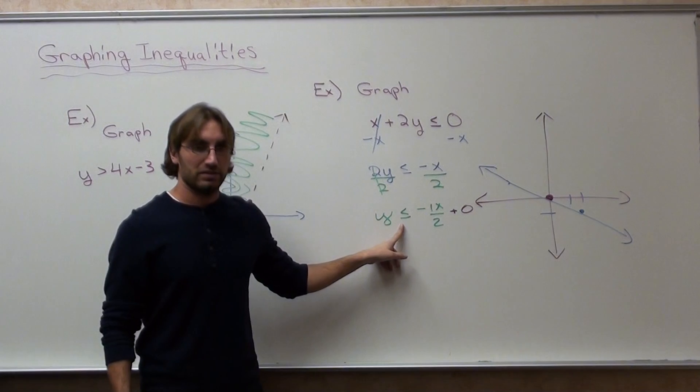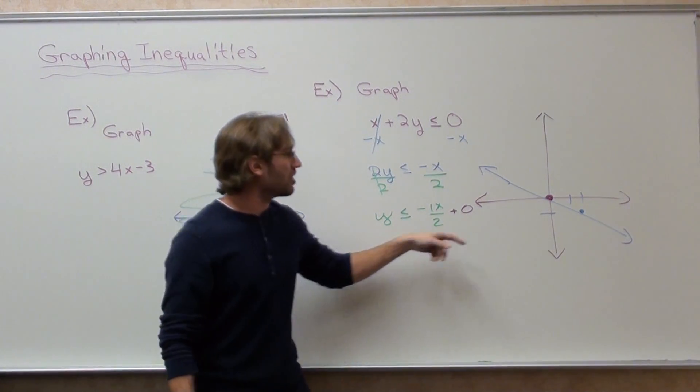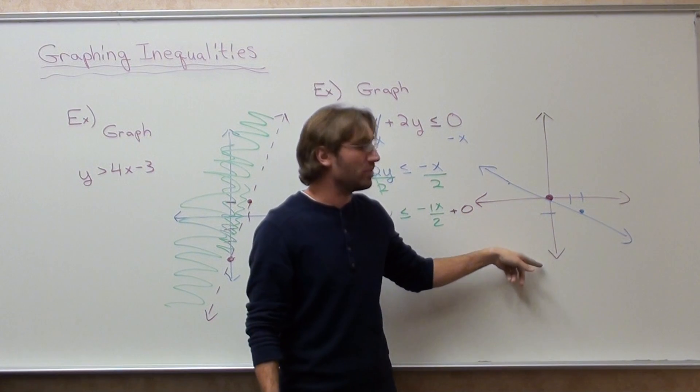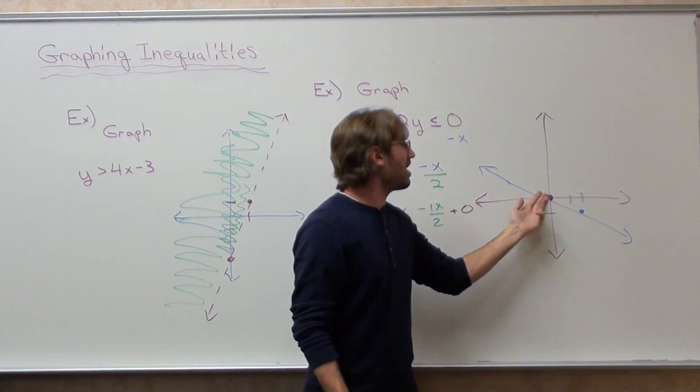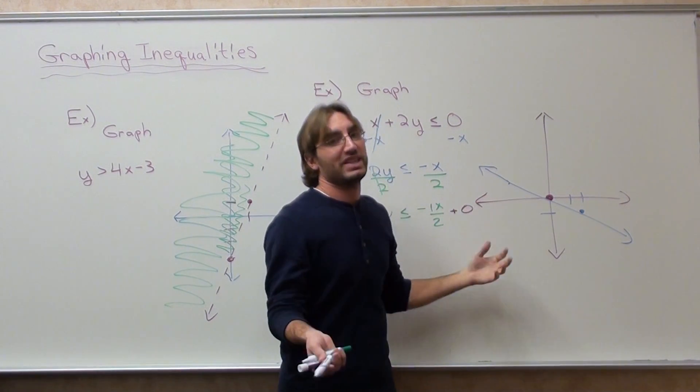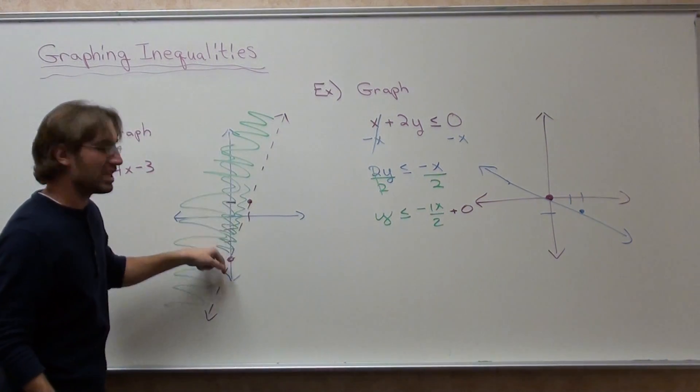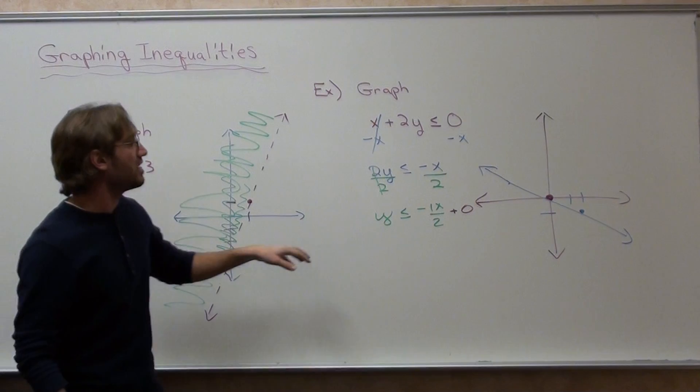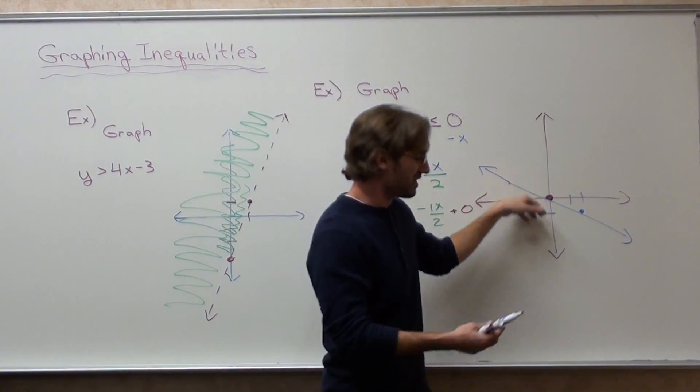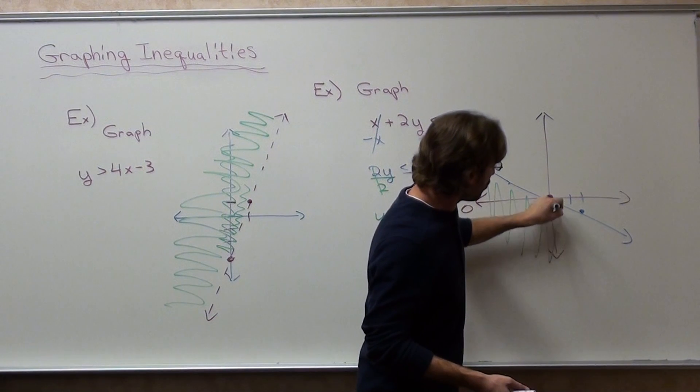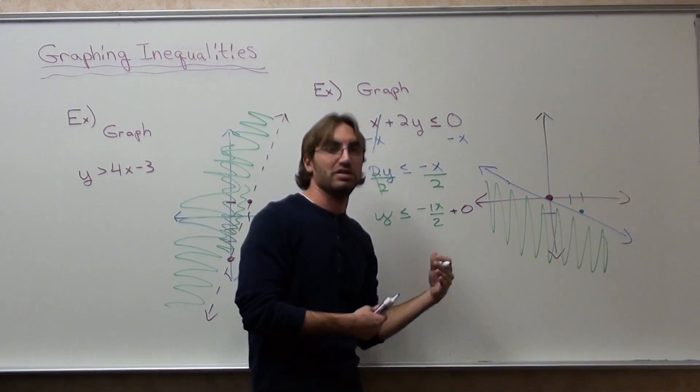It's less than or equal to, which means you're going to graph south of the y-intercept. If it's greater than, you graph north of the y-intercept. If it's less than, you graph south. Same thing here—we graphed north because it was greater. This one is less than or equal to, so we graph south. Done.